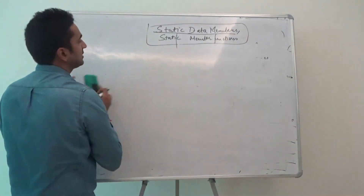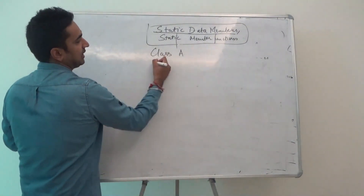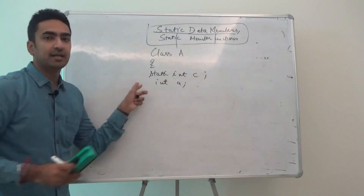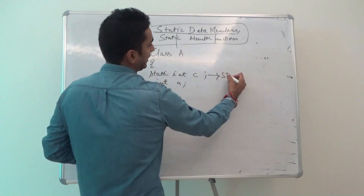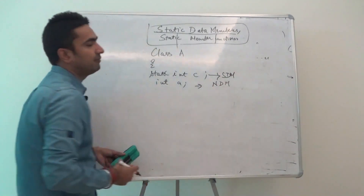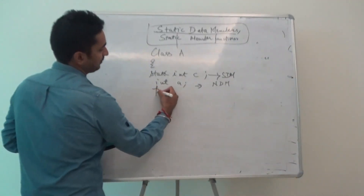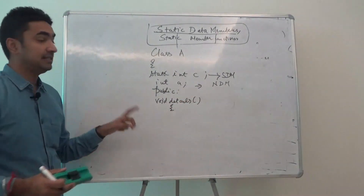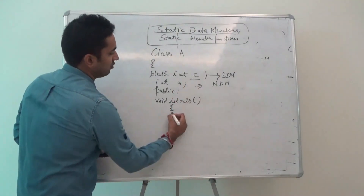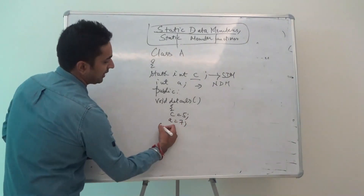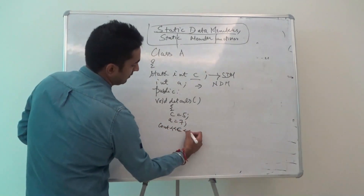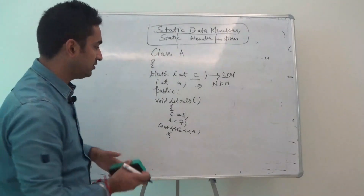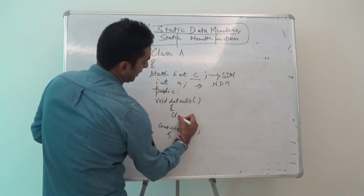We create a class like we did in the last video: class A. I'm declaring a static data member and a normal data member, and declaring them public. I'm using a function void details(). This is a very important factor — I can give the value of c as five and a as seven and display them, or I can take input values for c and a.